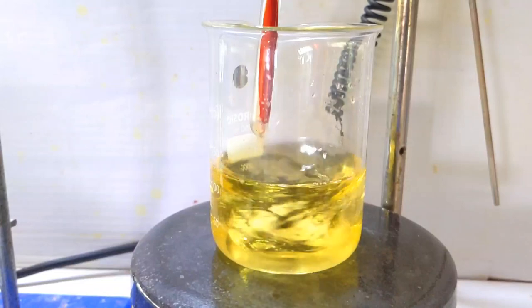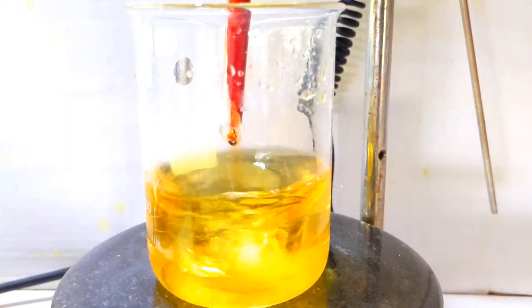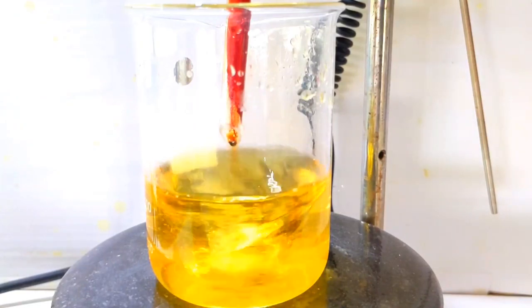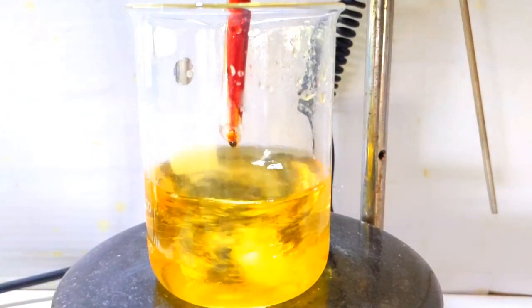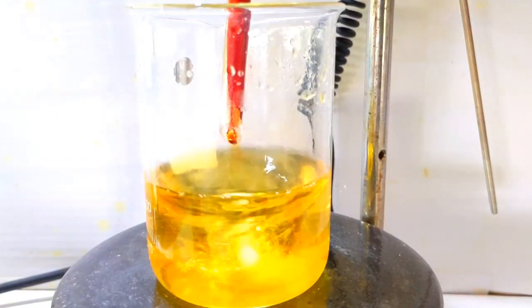Potassium bromate that is formed is much less soluble compared to potassium bromide. Therefore, by the end of the addition of liquid bromine, the potassium bromate will crash out of the solution without us doing anything.